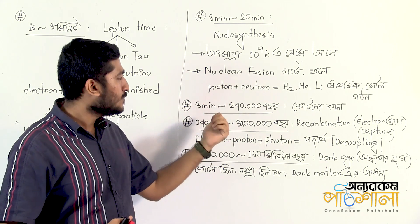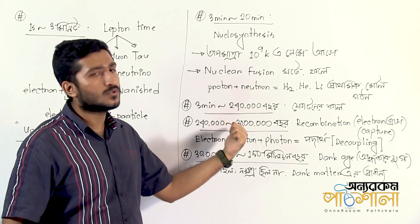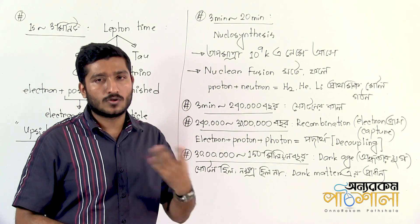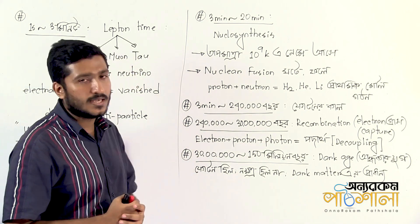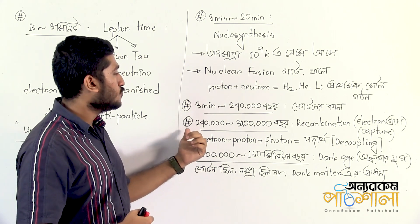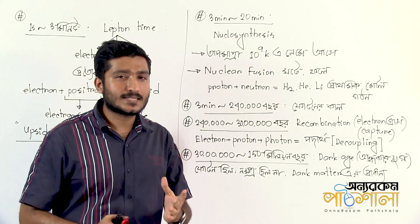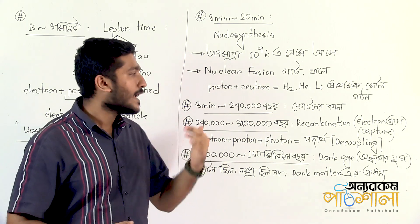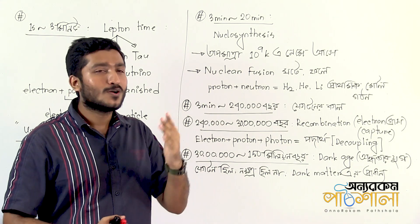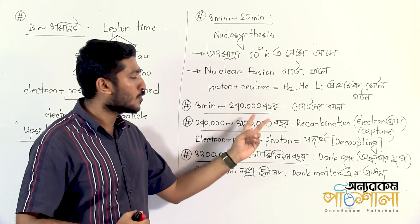After nucleosynthesis, around 20 minutes onwards, photons dominate the universe. Photons are the primary particles during this era. However, photons cannot travel freely yet because they constantly interact with the free electrons and protons in the plasma, scattering repeatedly.